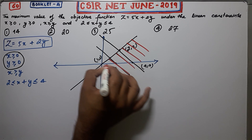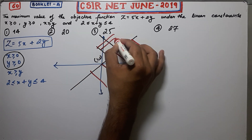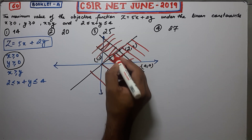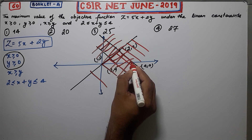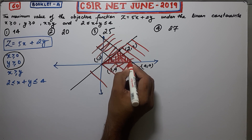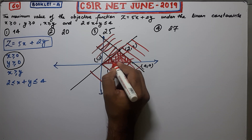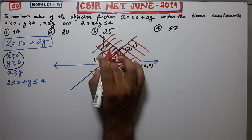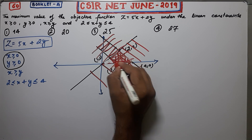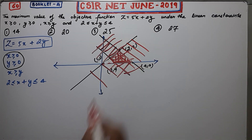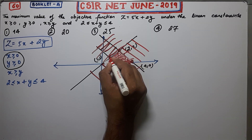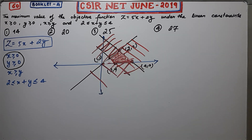Combining all the shaded regions, this will be your feasible region. Correction — the feasible region will be like this, because you need X plus Y to be greater than or equal to 2. Now, how many corner points do you have? You have 4 corner points.